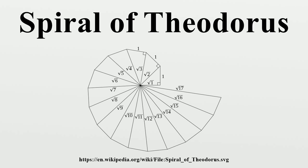A table shows the distance between two windings of the spiral approaching pi. As shown, after only the fifth winding, the distance is a 99.97% accurate approximation to pi.